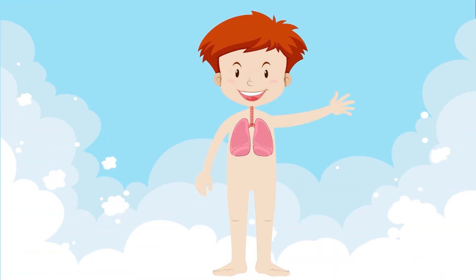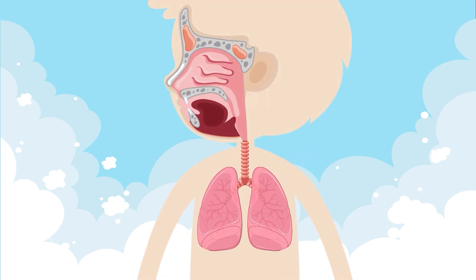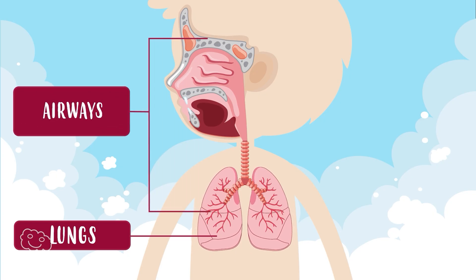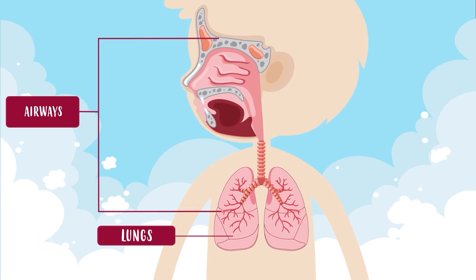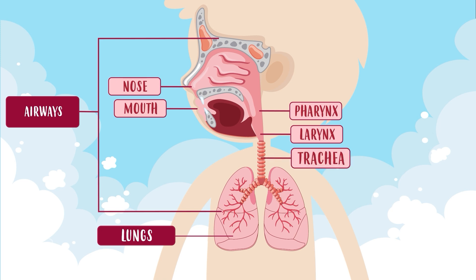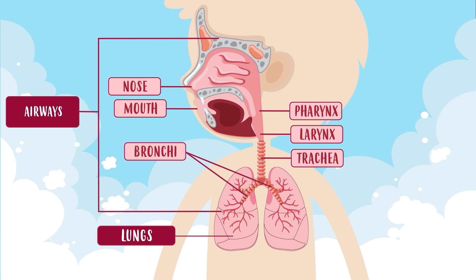The respiratory system is responsible for breathing, and for that it uses the lungs and the airways, which are the parts that compose it. The airways are tubes through which the air passes until it reaches the lungs. They are made up of the nose and mouth, the pharynx, the larynx, the trachea, the bronchi, the bronchioles, and the alveoli.